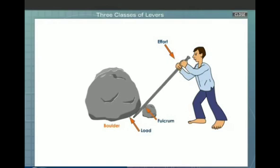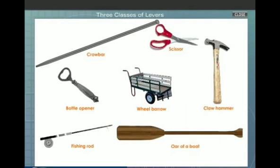Now let us understand the different types of levers based on the relative positions of the load, fulcrum, and the effort. In class 1 lever, the fulcrum is in between the load and the effort. A crowbar, a pair of scissors, and a claw hammer are some of the examples of class 1 lever.